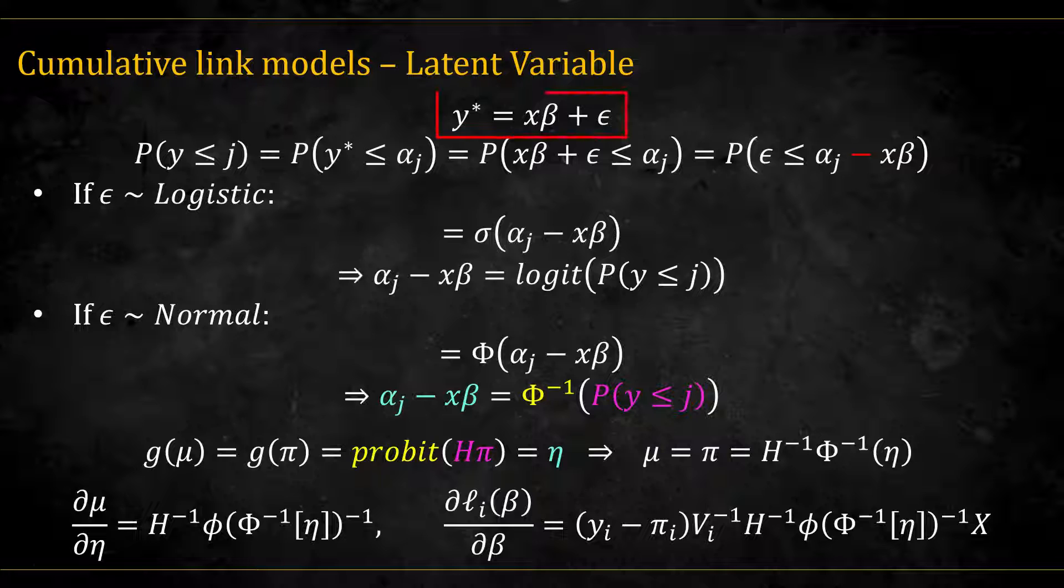Let's see this. We have that y star is equal to this. So, the probability that y is less or equal to j is equal to the probability that y star is less or equal to alpha j, which is equal to this thing. And if we isolate the random component, it's equal to this thing. A word of caution here. Because of this minus over here, some code implementations report beta, and some already report minus beta. So that's something we need to watch out for.